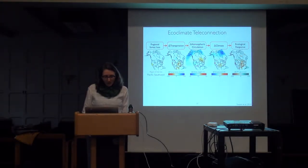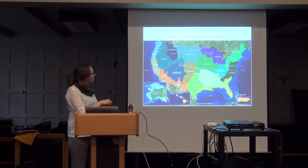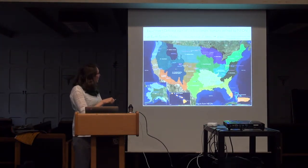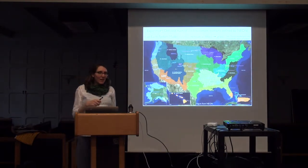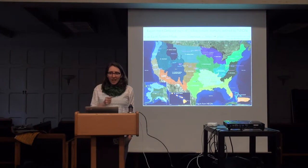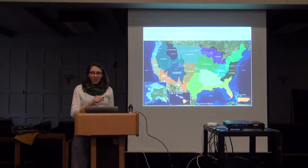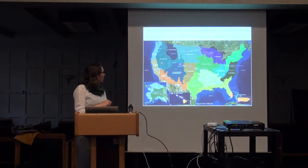We used 13 eco-climate domains defined by the National Ecological Observation Network, selecting the ones with the most forest cover. One at a time we removed all trees in our model world — pretty extreme changes — and replaced them with grasses. We're interested in how it matters whether there's forest on the west coast versus the east coast, etc.